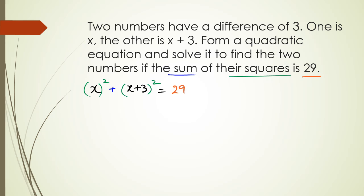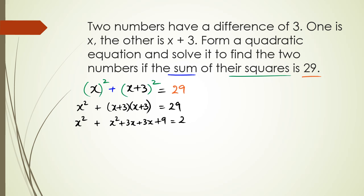What we're going to do is expand the quadratic, put the right-hand side equal to zero, then factorize and solve. So we have x² plus (x + 3)², which is (x + 3)(x + 3), all equal to 29. Expanding: x² + x² + 3x + 3x + 9 = 29.